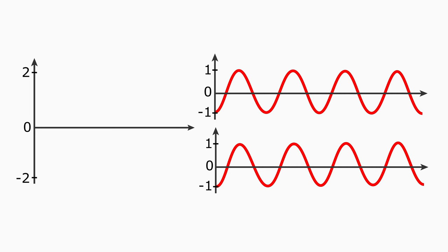Mathematically, interference means that the amplitudes of the waves add up. Amplitude of one wave plus the amplitude of the other wave gives the amplitude of the resulting wave.